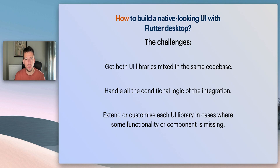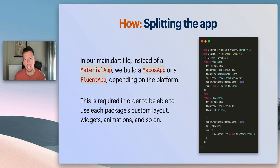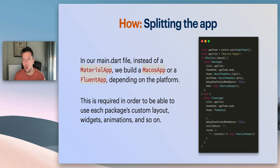In our main file, instead of MaterialApp, we build a MacOSApp or a FluentApp depending on the platform. This is done simply with a conditional check — if platform is macOS. This is required in order to use each package's custom layout, widgets, animations, and all other default components that both libraries provide.